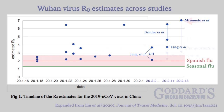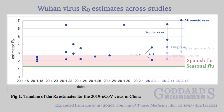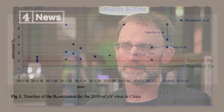Two of the studies also estimated the R-values after China implemented quarantine measures within the time frame of the studies. Given that the Wuhan virus is at least as infectious as the Spanish flu, leading infectious disease epidemiologists believe the virus could infect up to 60% of the world's population. Here, for example, is Neil Ferguson, an infectious disease epidemiologist at Imperial College London.